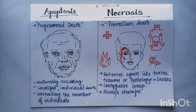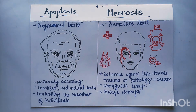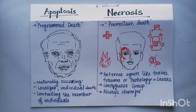Today we will discuss the different types of cell death. There are two types of cell death: apoptosis and necrosis. Apoptosis is a naturally occurring cell death — like the death of an aged man — which is natural. Whereas necrosis is a type of death that is accidental in nature, like premature death. It can be due to external agents like trauma, pathogens, toxins, or absence of oxygen.